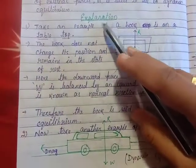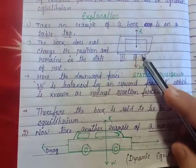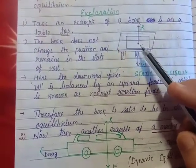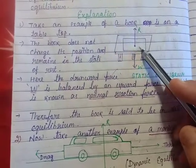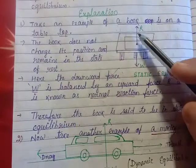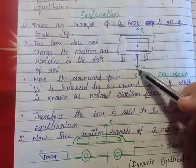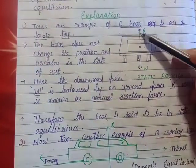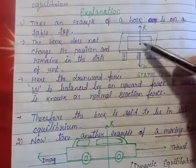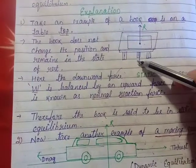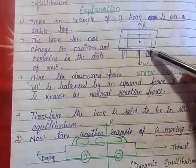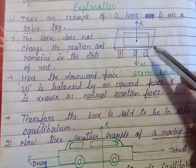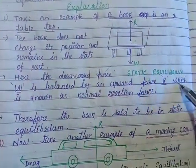For example, consider a book kept on a table. It does not change its position because it is balanced by two forces: the downward force W and the upward normal reaction force R. These two forces are equal and opposite, so they cancel each other. The net resultant force is zero, which does not allow the book to move — this is the static equilibrium condition.